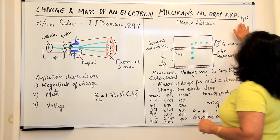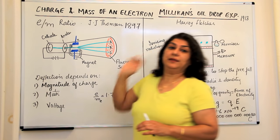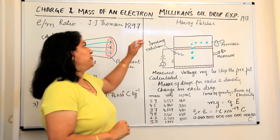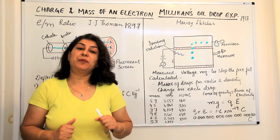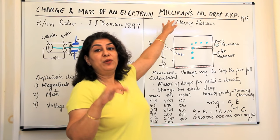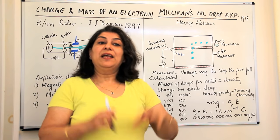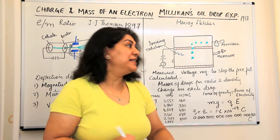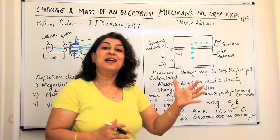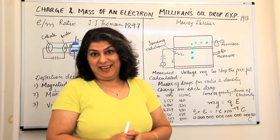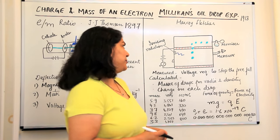Now in 1913, a scientist called Millikan and his friend Harvey Fletcher carried out an experiment which is popularly known as Millikan's oil drop experiment. When they did this experiment, they were able to calculate the mass and the charge of an electron. Let us see what Millikan did in his oil drop experiment.